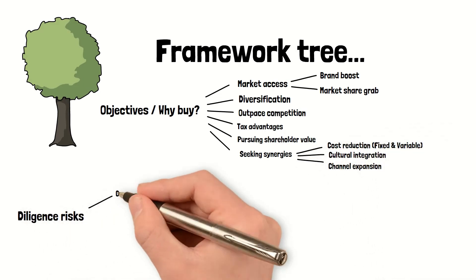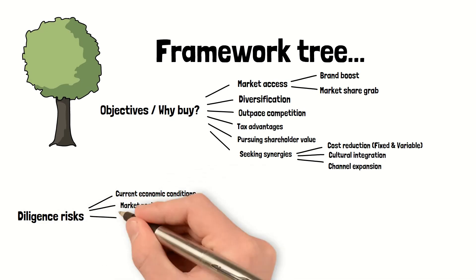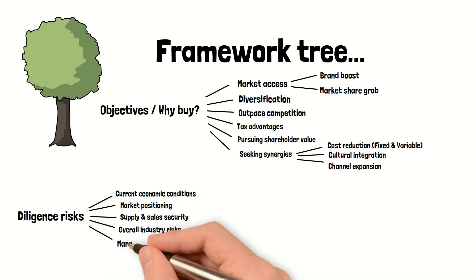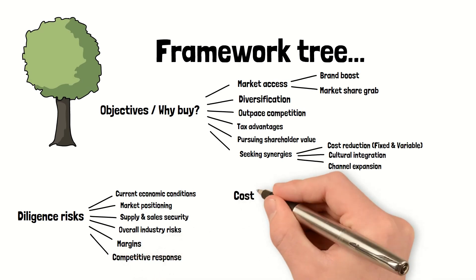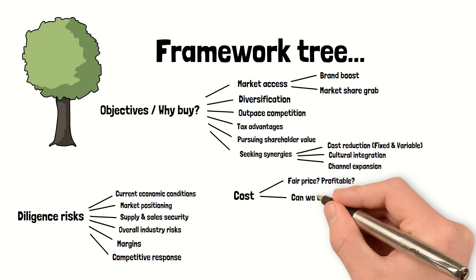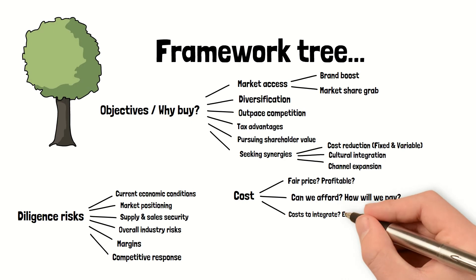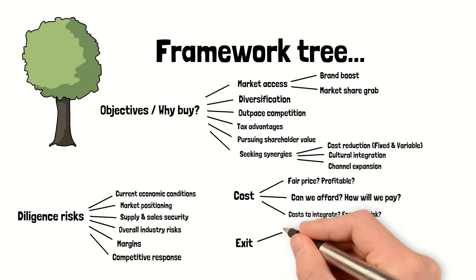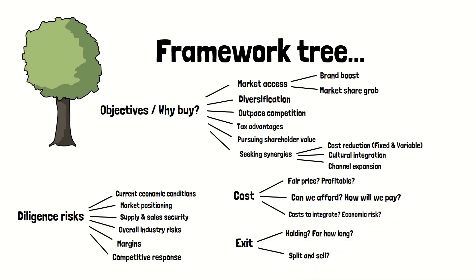Outline your due diligence risks: what is the shape of the economy, what is the market positioning, is there security of supply and sales pipeline, are there any overall industry risks, what do the margins look like, and who is the competition? Then dig into the cost: is the price fair, are they profitable, can we afford it, how are we paying for it, do we have to integrate any costs, and can we field the broader economic risks this company may face? Then dig into your exit strategy — how long will we be holding, or do we plan to break it up and sell it?